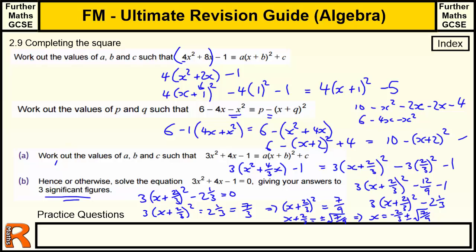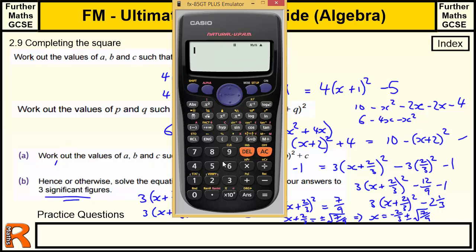So we've got minus 2 thirds plus the square root of 7 over 9. And that gives us 0.215 or if we could change that to a plus. Sorry, that was a plus, wasn't it? Taking that to a minus. Minus 1.55. Okay, so those are the two answers there.